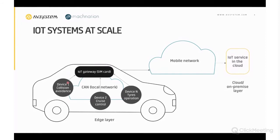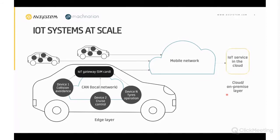The gateway can be aggregating data from multiple devices, filtering information, and providing artificial intelligence functionality for quick input to devices in the car. In the cloud, we have the IoT service responsible for system management, monitoring, and the business logic of the whole IoT service. That same system can also be deployed in an on-premise scenario. This is the example of one car — but there can be many cars on the road, each with multiple devices, so the number of devices in your IoT system can scale up very quickly.